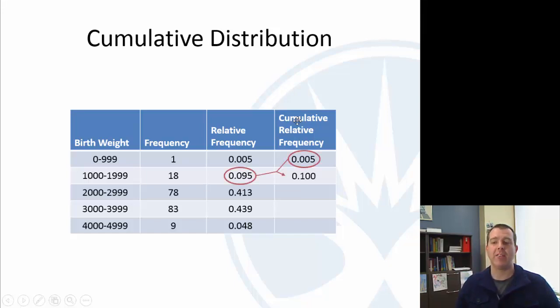And similarly for 2,999 you'd want to add all three of these, or take the previous one and add that here, and you can add the next one as you go. And the last one should round to 1, and in fact in this case it does.